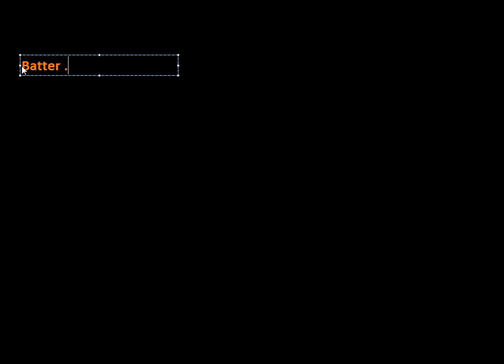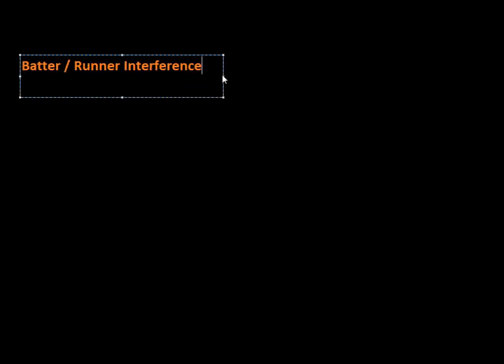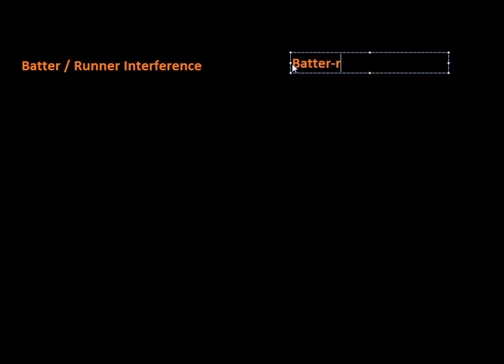Let's take a look at some of the situations that can be considered batter or runner interference. Sometimes you will even hear the term 'batter runner' used. This would be a player who's in the middle — say if the batter puts the ball into play and he's running to first base, he's in that area between being a batter and a runner. So we would call him the batter runner.